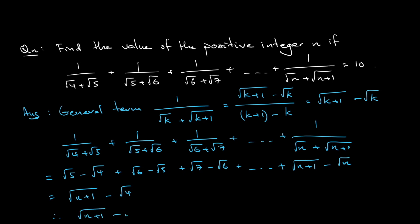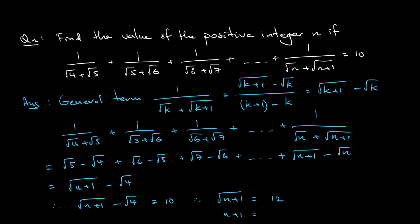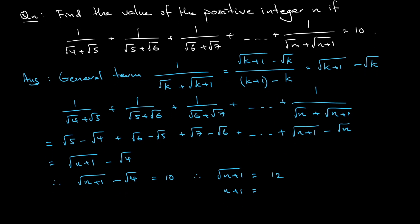Square root of n plus 1 equals 12, since square root of 4 is 2, and shifting to the right hand side gives 2 plus 10 equals 12. That means n plus 1 equals 144 when we square both sides. Hence n equals 143. We have completed this lesson.